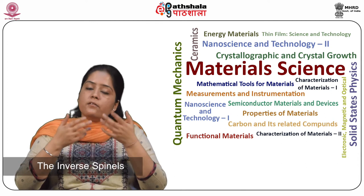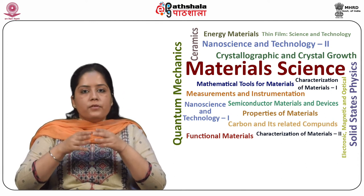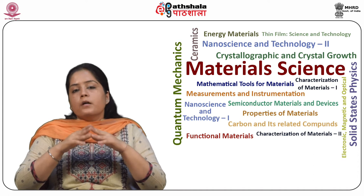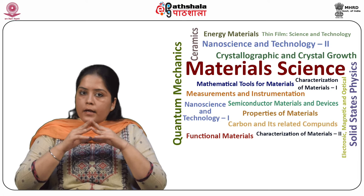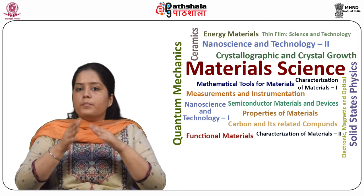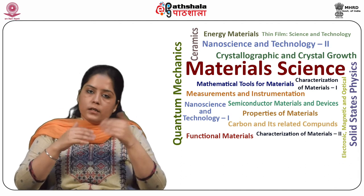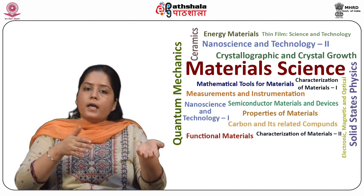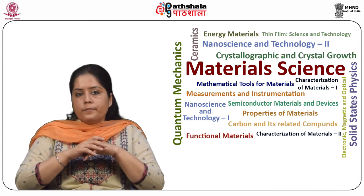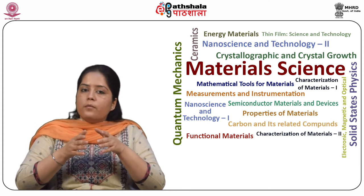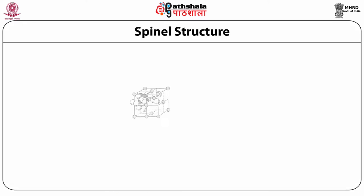The inverse spinels — for example, Fe3O4 and NiFe2O4 — have the formula BABO4. Half of B occupies tetrahedral sites, while A and the remaining B occupy octahedral sites. There are 8 formula units per unit cell.